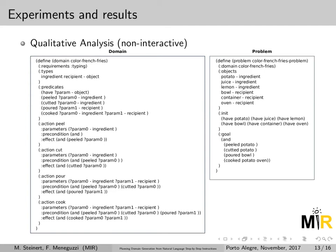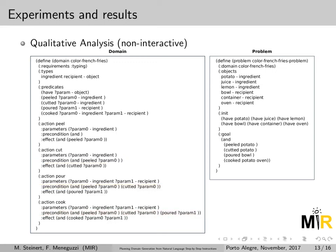Next we have our symbolic representation in PDDL format. We have our domain definition and our problem definition. Some points to emphasize: as in our earlier example, the peel action comes earlier, and we have as a precondition for cut the peel action's effect on the object, which is an ingredient here. The same applies to the following actions. And in the problem definition, as a goal, we have all of our actions' effects that were solved.